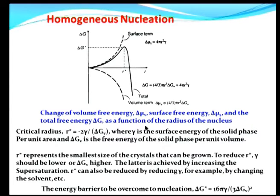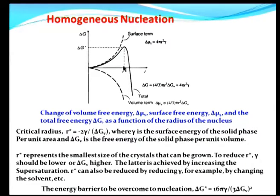As nucleation takes place, there is a change in volume free energy as well as surface free energy, because you begin to have the free energy due to the formation of the nucleus which has a surface. So there is a competition between the volume free energy and the surface free energy — the surface free energy goes up and the volume term comes down, and the summation has a maximum at R*, which is called the critical radius. This critical radius is the radius beyond which the nucleus is stable. Below the critical radius, a nucleus would go back into solution, and that particular nucleation would have been a failure.